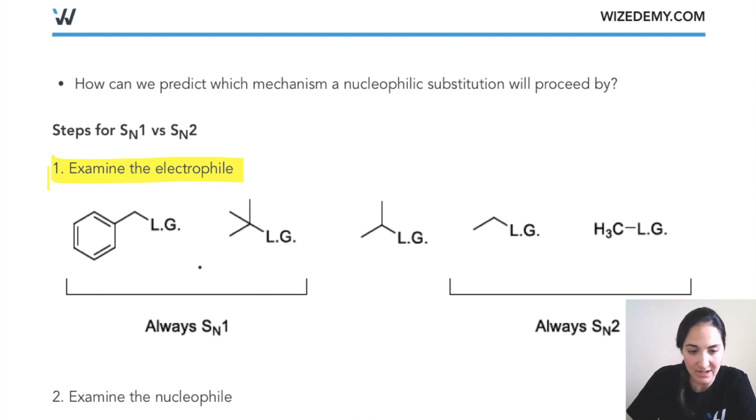If we have a tertiary alkyl halide or a benzylic alkyl halide, not usually but always, we will get an SN1.